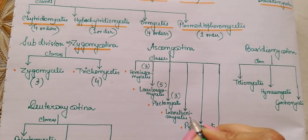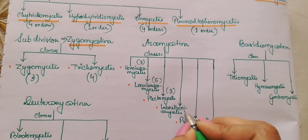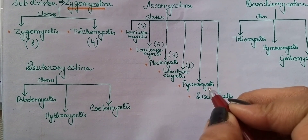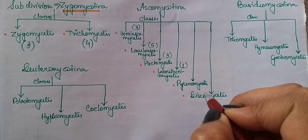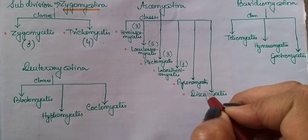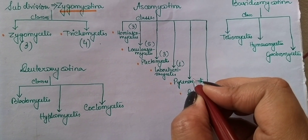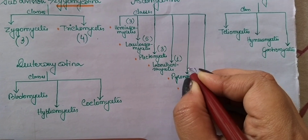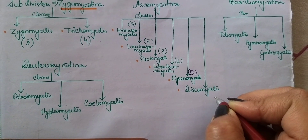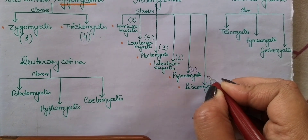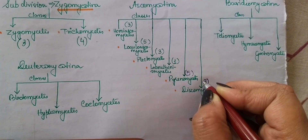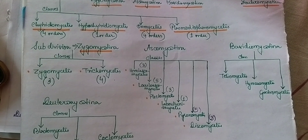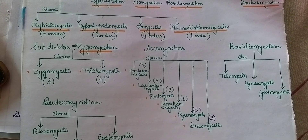Laboulbeniomycetes has got one order. And Plectomycetes has got three orders. Now coming to Basidiomycotina and its classes — there are three classes under Basidiomycotina.